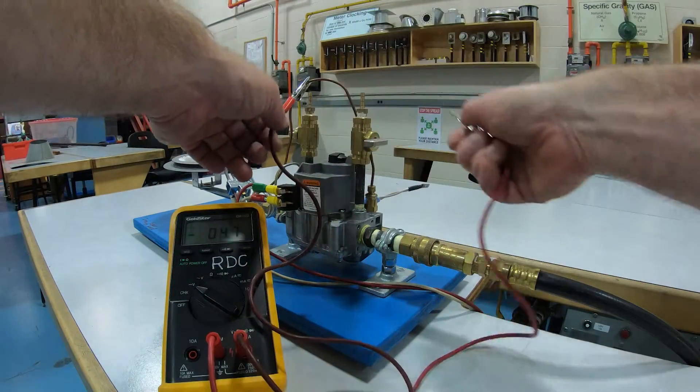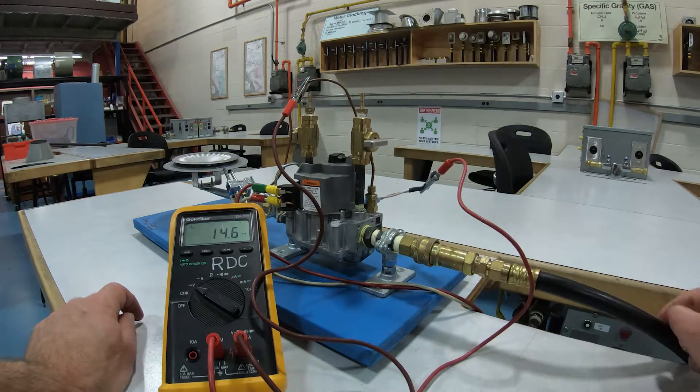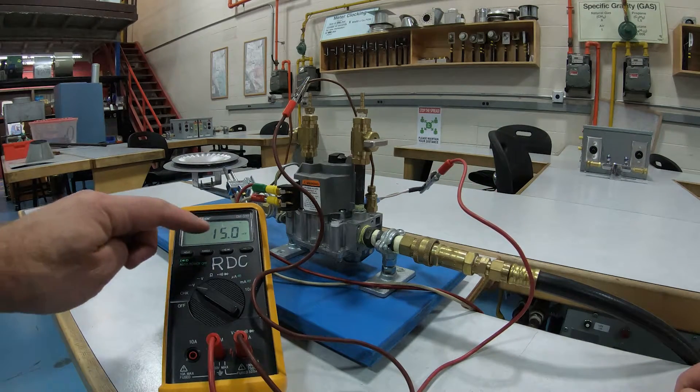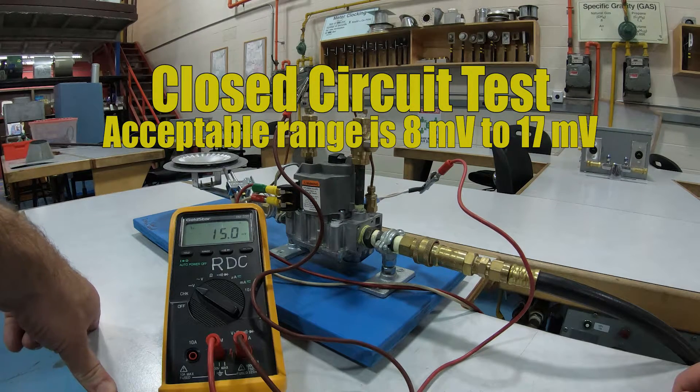And clip this one on, and now we're at 15 millivolts positive. Now this is good. Our acceptable range is between 17 and 8 millivolts for the closed circuit test.